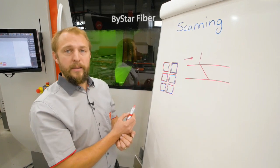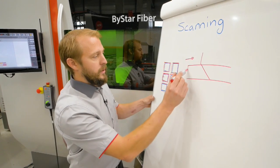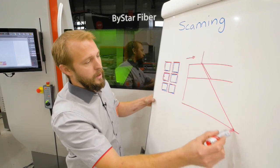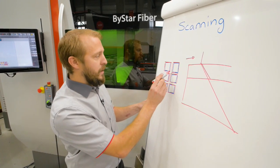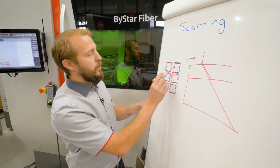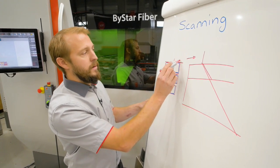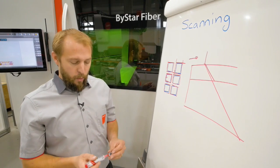In thin material, that doesn't play a role. But as soon as our material is becoming thicker, it will go longer. And then we will have so-called overcuts. So we cut over the lines, which obviously no one wants.